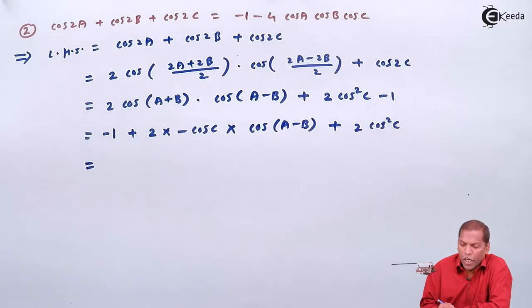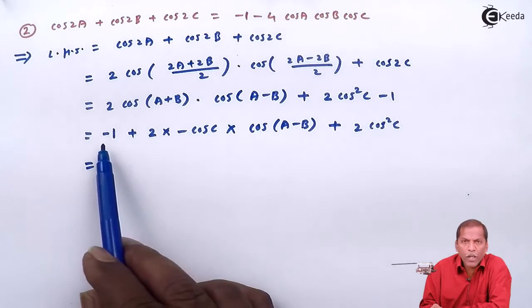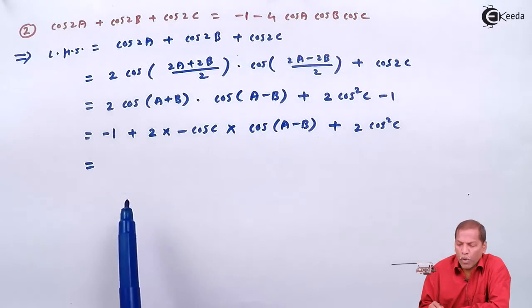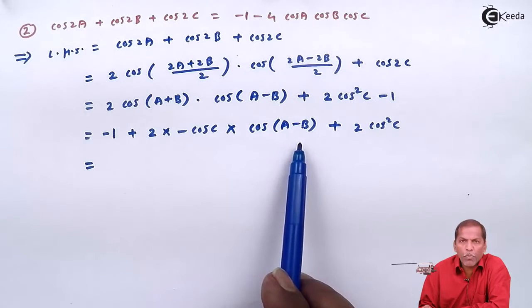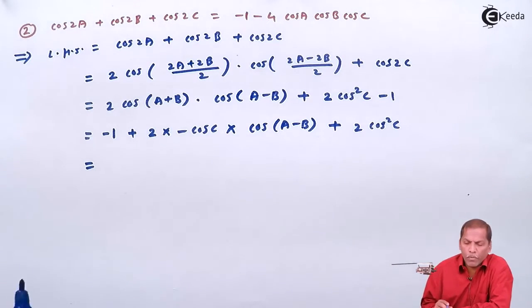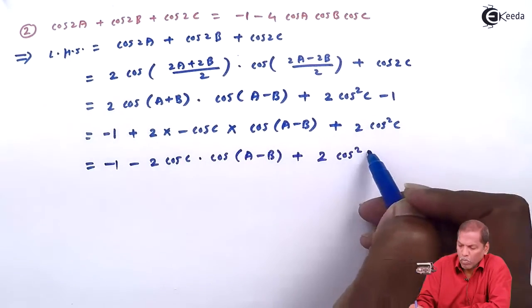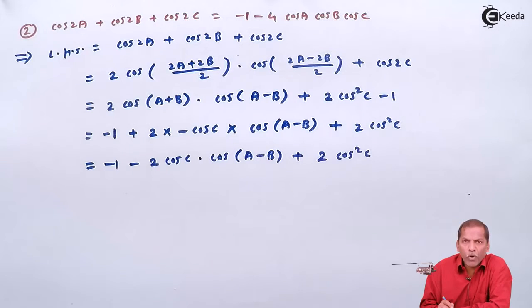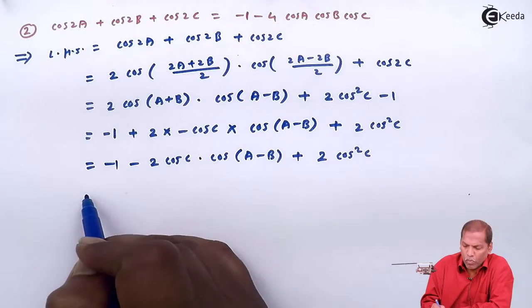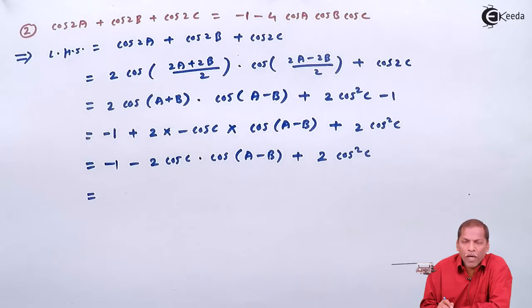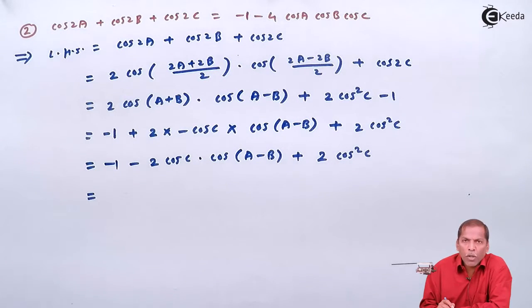This is equal to -1, then writing plus·minus as minus, the next term becomes -1 - 2·cos(c)·cos(a-b) + 2cos²(c). From the second and third terms, we take -2·cos(c) common. So the next step gives: -1 - 2·cos(c)·[cos(a-b) - cos(c)].